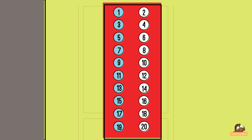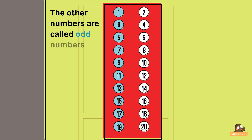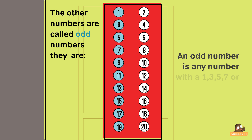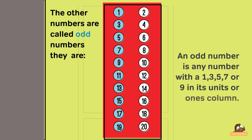And the other numbers are called the odd numbers. They are 1, 3, 5, 7, 9, 11, 13, 15, 17, 19. An odd number is any number with a 1, 3, 5, 7, or 9 in its units or ones column.